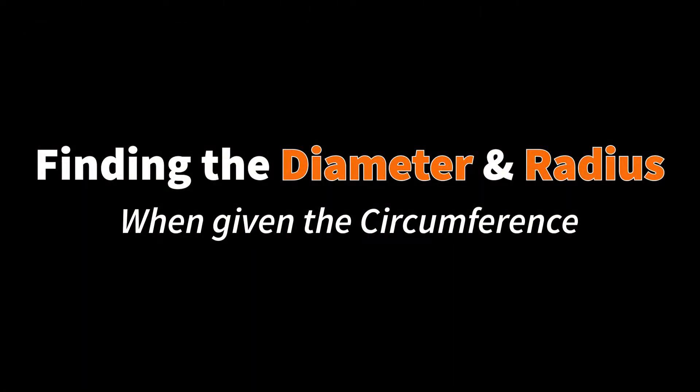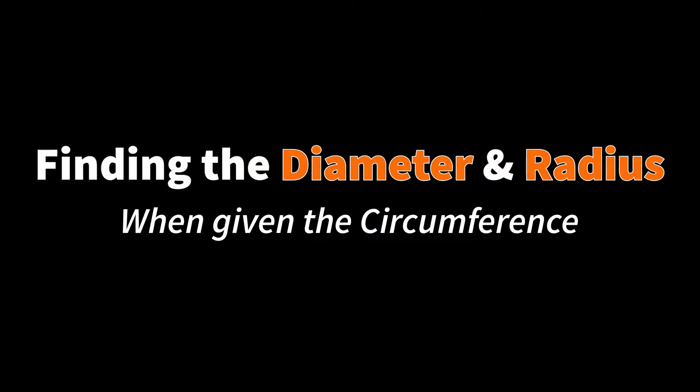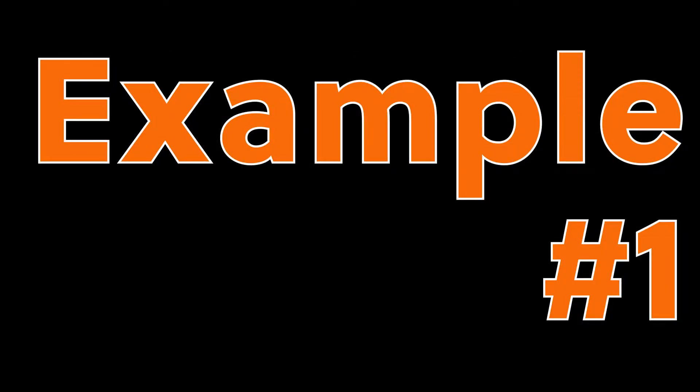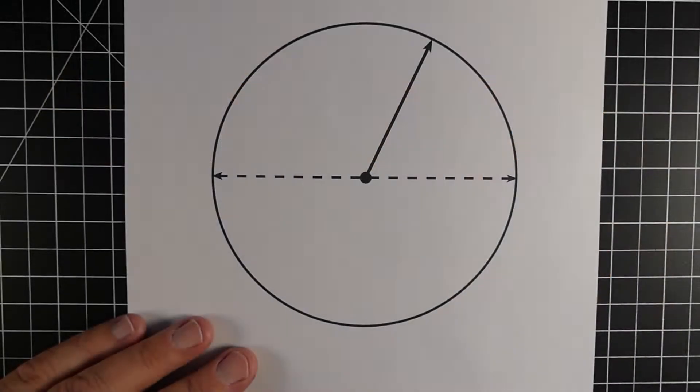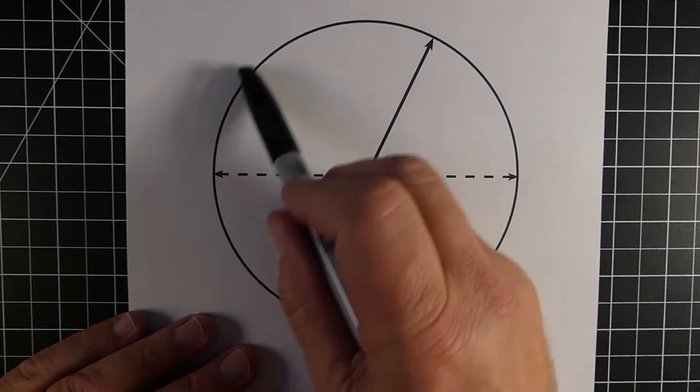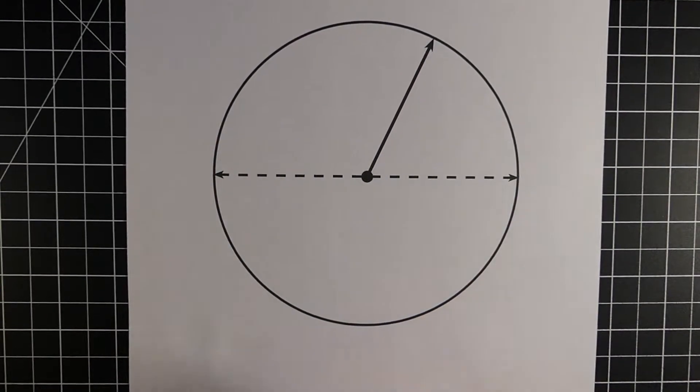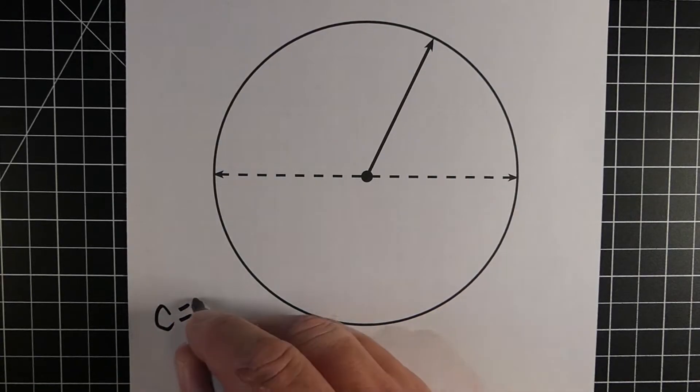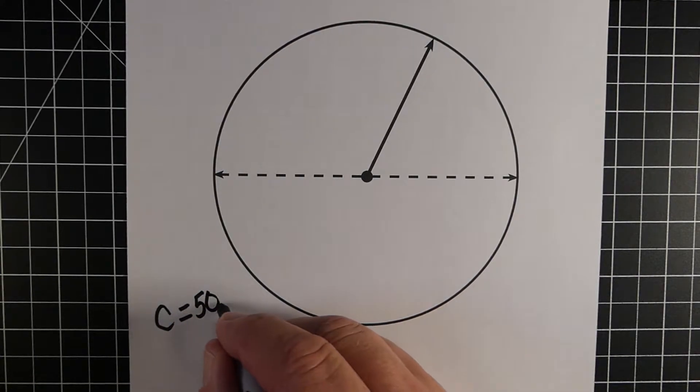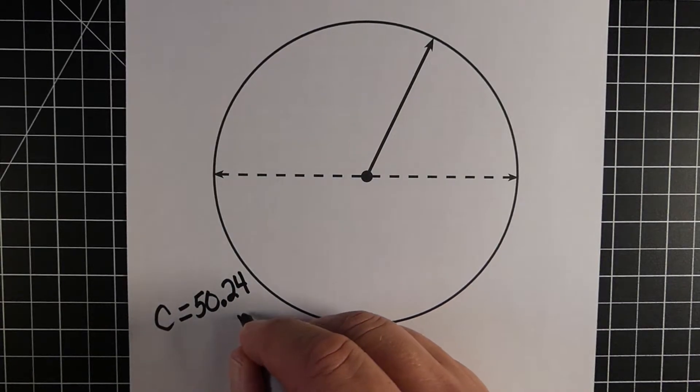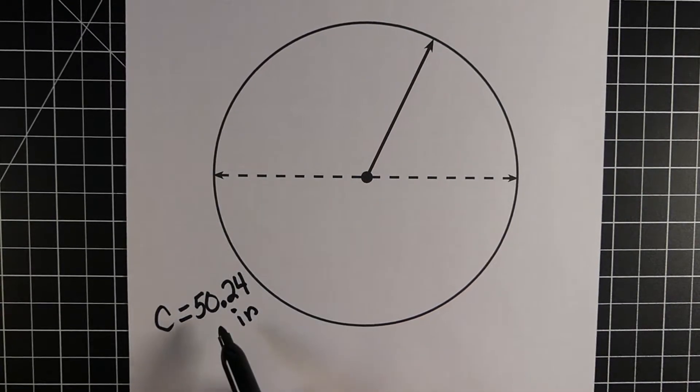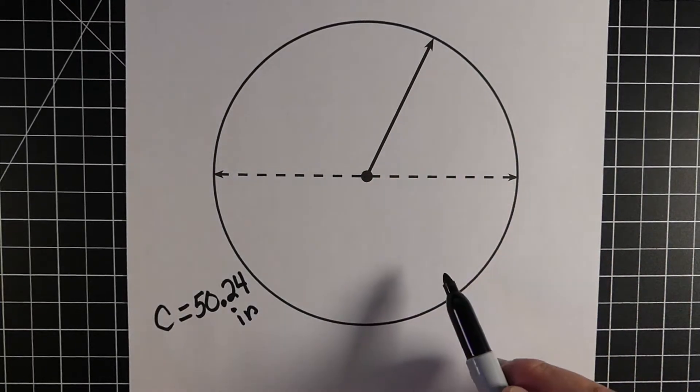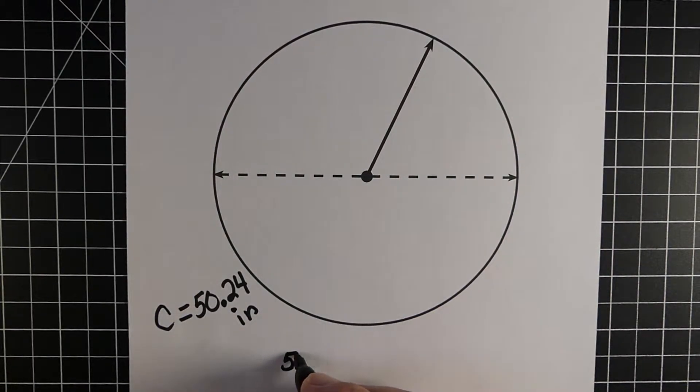So we're going to focus on trying to find either the diameter or the radius when we're given the circumference. So here's example number one. So in this problem right here, we know circumference is the distance around the circle. And for this particular circle, our circumference is going to be 50.24. And we're going to make this in inches. So the distance around here would be 50.24 inches.